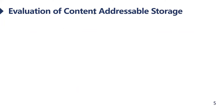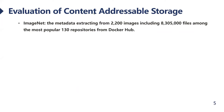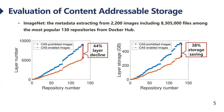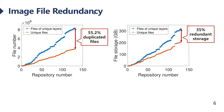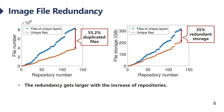Does Content Addressable Storage work well? We evaluate this scheme with ImageNet. We pull 2200 images among the most popular 130 repositories from Docker Hub and extract the metadata of these images. Content Addressable Storage contributes to a 44% layer decline and around 38% storage saving, and the saving gets larger with the increase of images. However, different layers cannot be shared through CAS, but they have many redundant files. Around 55% of files are duplicated and 35% storage can be saved if we store only unique files.